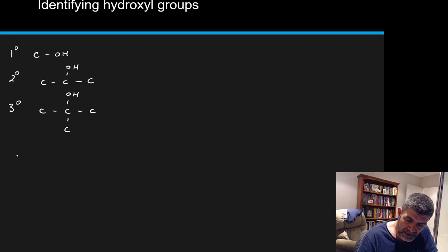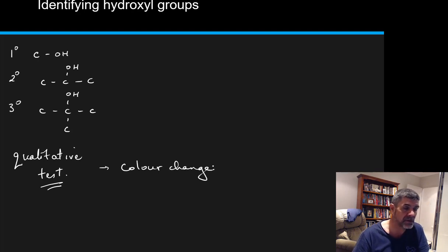Because this is a qualitative test, we just need to identify the position of the hydroxyl group. The best way of doing that is to use something where we have a color change. If a reaction occurs, we can see that reaction has occurred by identifying the change in color.